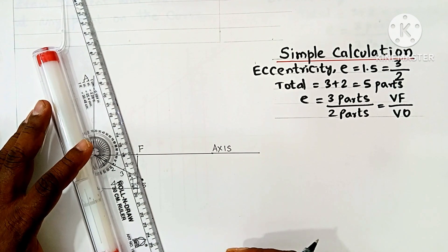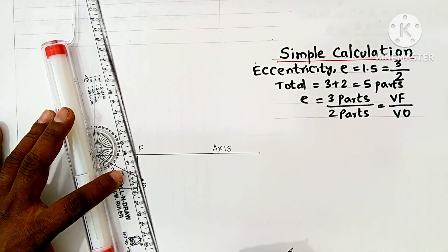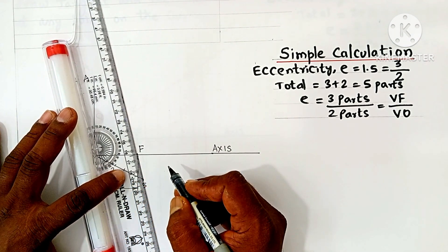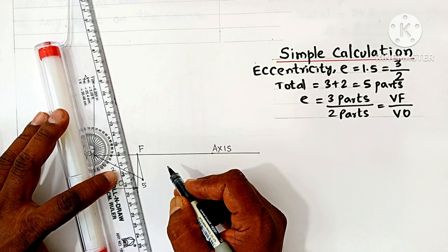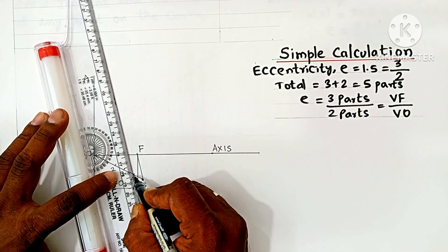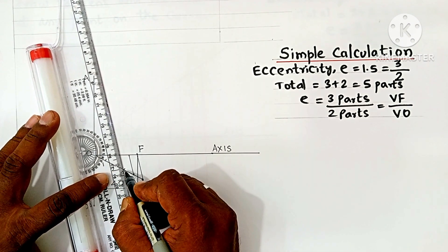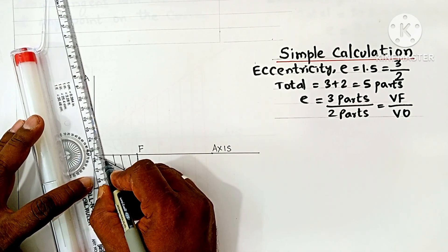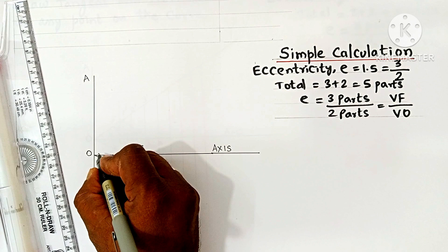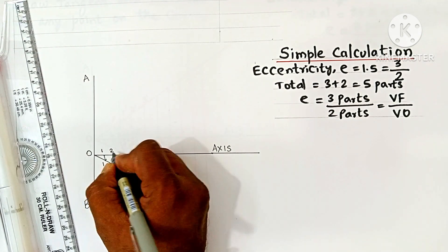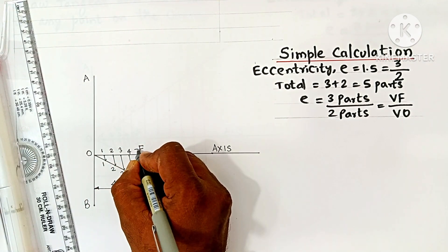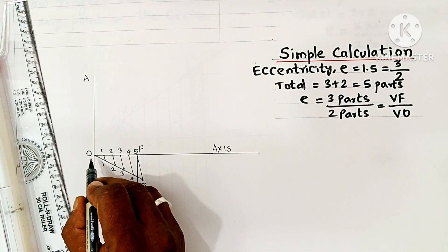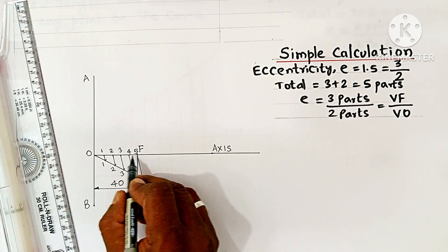Join point 5 and point F. By adjusting your scale and rolling it, draw parallel lines using the same setting. Rename the divisions 1, 2, 3, 4, 5, where the fifth point is F, the focus. By this method, OF has been divided into 5 equal parts.